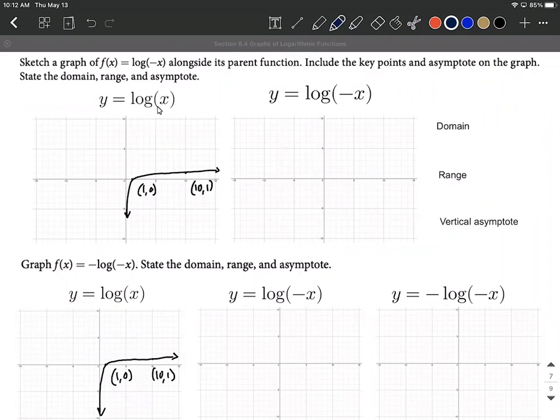And those are always going to be (1, 0), and then the base, in this case it's an understood 10 because it's common log and it's not identified, so that's automatically base 10 comma 1.